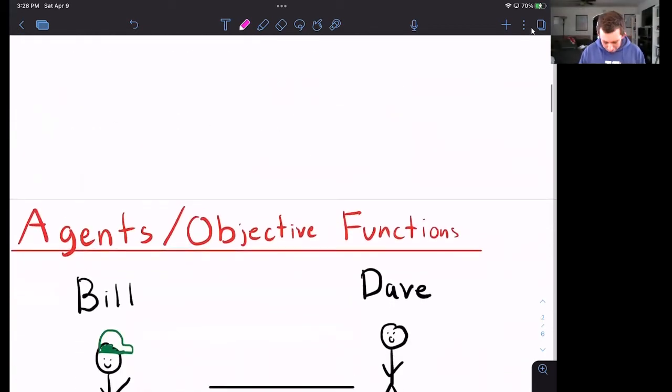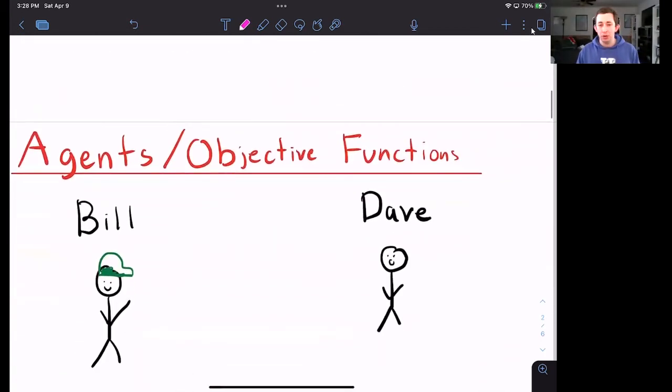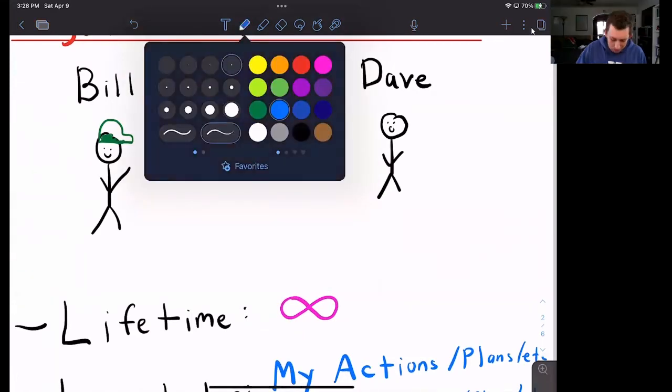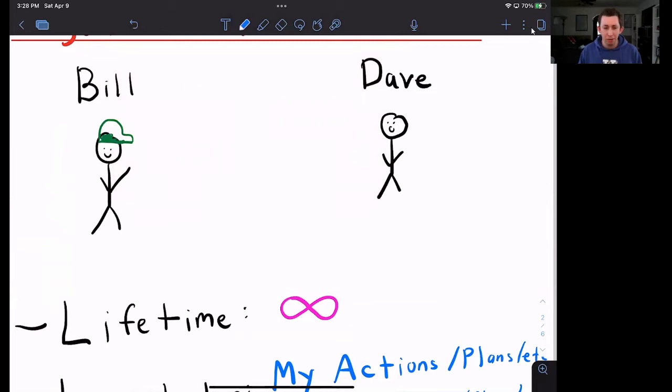We're going to start by talking about Bill and Dave. These are the two people who live in our simple Arrow-Debreu model. How long do these people live? They live forever, so their lifetime is infinity. That is one thing that's going to make this model more difficult than maybe models you've seen before.